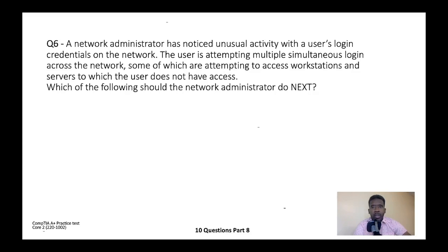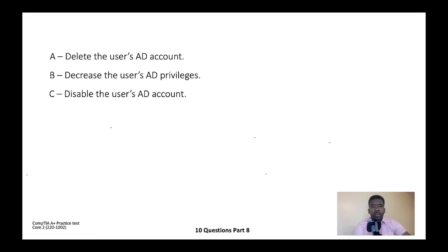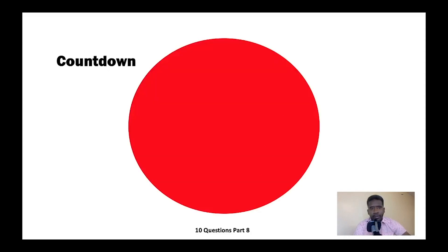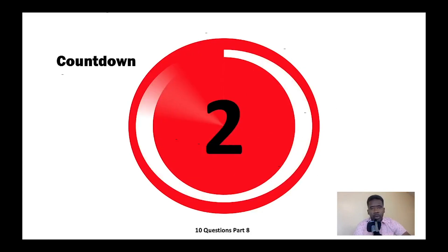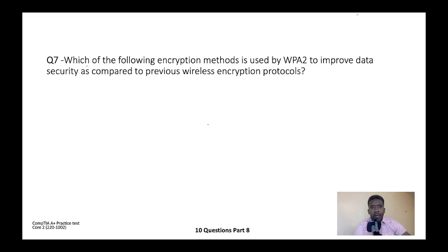Question six: A network administrator has noticed unusual activity with a user's login credentials on the network. The user is attempting multiple simultaneous logins across the network, some attempting to access workstations and servers the user does not have access to. Which of the following would the network administrator do next? A) Delete the user's Active Directory account, B) Decrease the user's Active Directory privileges, C) Disable the user's Active Directory account, or D) Reset the password. When something like that happens, you need to disable the account. The correct answer is C — disable the user's Active Directory account.